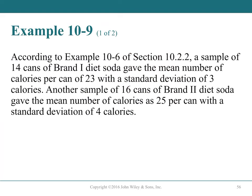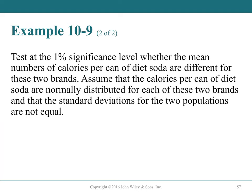Diet soda example: 14 cans of brand 1 (mean = 23 calories, s = 3) and 16 cans of brand 2 (mean = 25 calories, s = 4). Both small samples, both normally distributed, standard deviations not equal. Test at α = 0.01 whether the mean calories per can differ between brands.